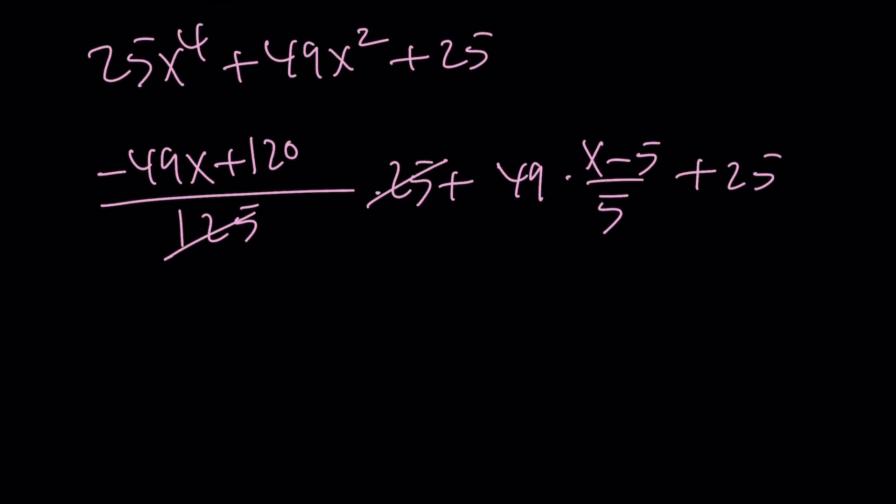Okay, great. So we can go ahead and simplify these. That's going to give us a 5 at the bottom, which is nice because that kind of makes a common denominator. And then when you add them up, negative 49x plus 120 plus 49x minus 245. Plus, we're going to have to multiply this by 5, 125.